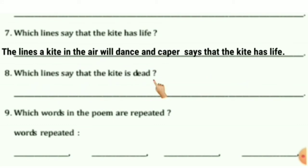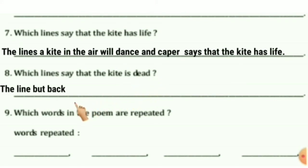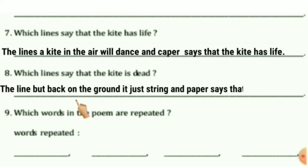Question 8: Which line says that the kite is dead? The line 'But back on the ground is just string and paper' says that the kite is dead.